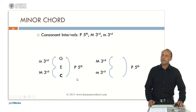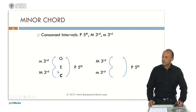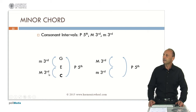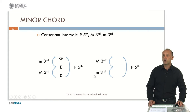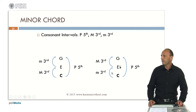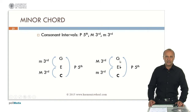Now we can look for another kind of consonant chord. If we look at the structure of the major chord, we find that we have a major third and above it a minor third. If we invert the order of these thirds — that is, we put first the minor third and above it the major third — we obtain a new consonant chord, in this case formed by the notes C, Eb and G, which is the C minor chord, which is consonant.